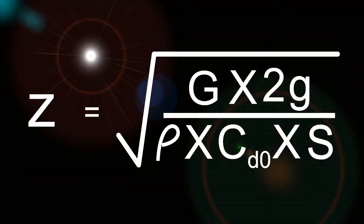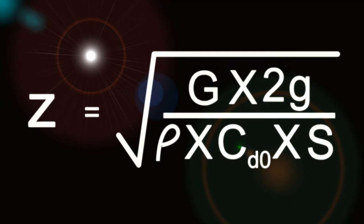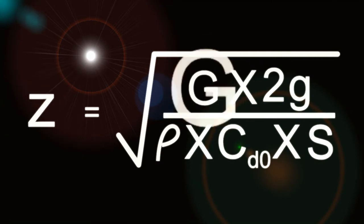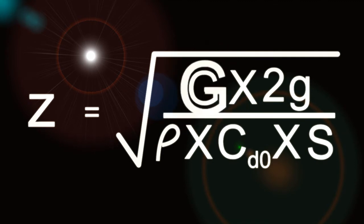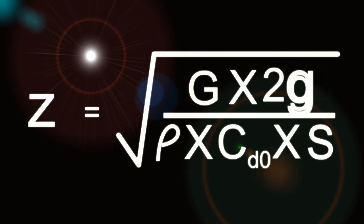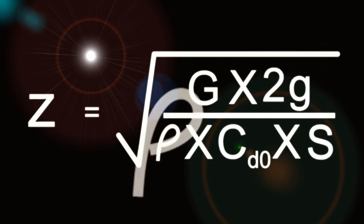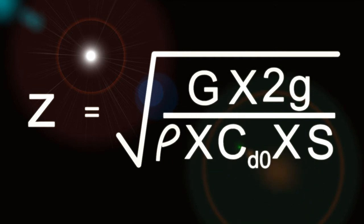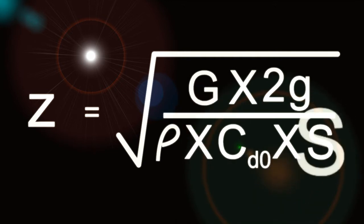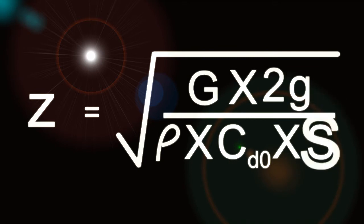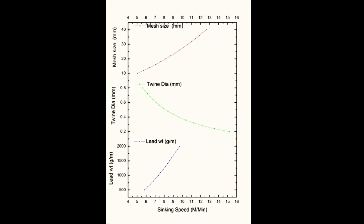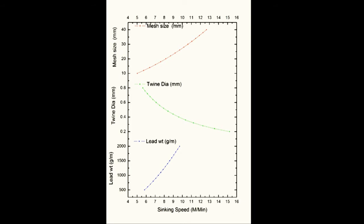So the scientists at CIFT deduced a new formula which adheres to the sinking pattern of ring seines. Sinking speed is represented by the letter Z and is expressed in meters per minute. Capital G stands for weight of the net material in water including webbing and accessories. Small g represents acceleration due to gravity. Rho is for density of sea water. CD zero is for drag coefficient of the knotted meshes, and S stands for wetted surface area. This formula was tested against theoretical parameters including twine diameter, mesh size, and lead weight.